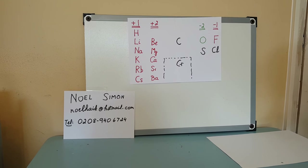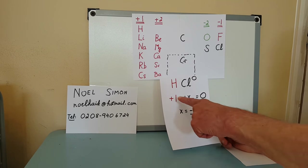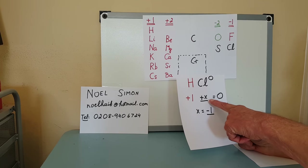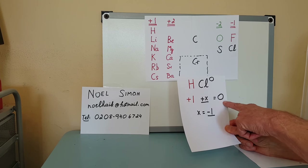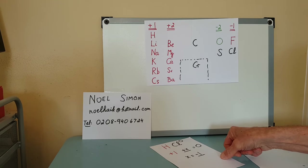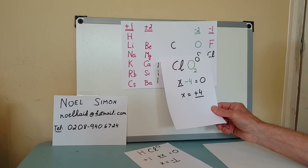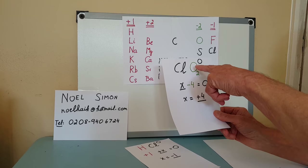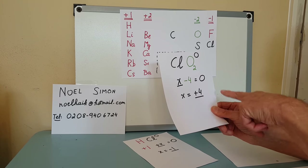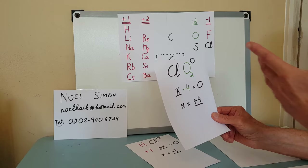Let's take some examples. First, a familiar one: HCl. H is +1; we call chlorine x. The molecule is uncharged, so the sum equals zero. Solving: x = −1, so chlorine is −1, which you already know. Next, ClO₂. Oxygen is semi-fixed at −2; two oxygens give −4. Chlorine is x, and the whole molecule is uncharged, so x + (−4) = 0. Therefore x = +4, so the oxidation number of chlorine in ClO₂ is +4.